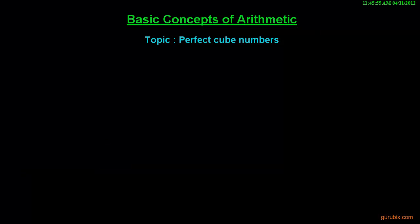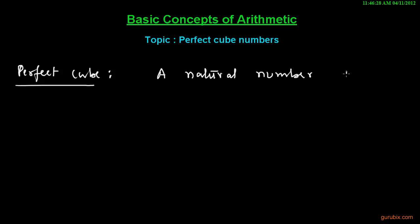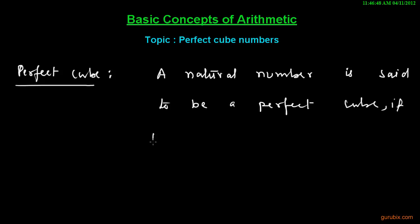Welcome friends. In this video we shall learn about the perfect cube of a number. We can define perfect cube of a number like this: a natural number is said to be a perfect cube if it is a cube of some natural number.